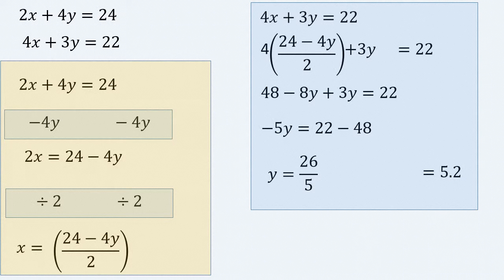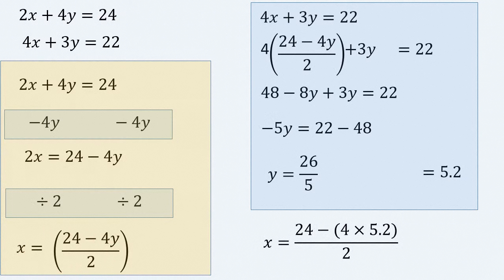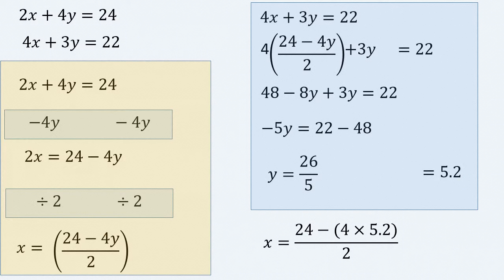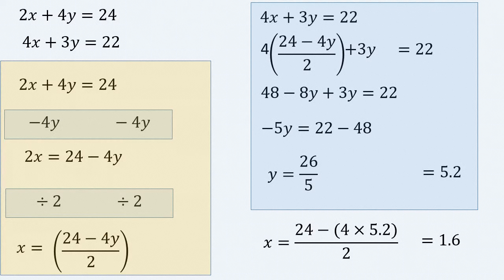Now we simply substitute this value back into that expression, and this gives us x equals 24 minus 4 multiplied by, now instead of y, we put 5.2, which is the value of y, all divided by 2. If you work this out, you will find that x equals 1.6. So the answer for this set of simultaneous equations is x equals 1.6 and y equals 5.2.